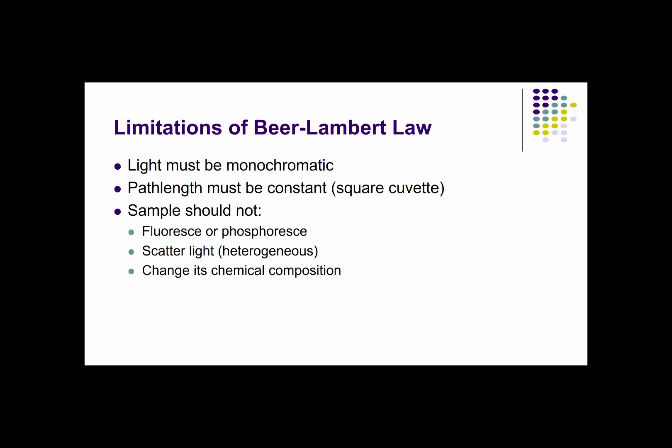Secondly, the path that the light takes through the sample has to be a constant. And basically this means that the cell that we use to probe the sample has to have a very specific shape. These end up being rectangular or square cuvettes.